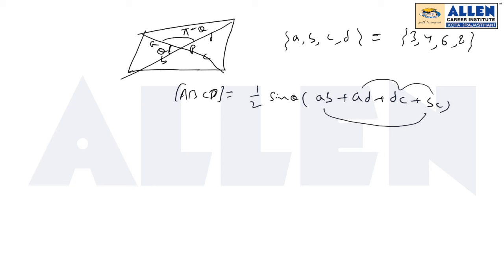So how will I assign A, B, C, D so that its product is maximum? Obviously sine theta must be equal to 1, so I'm taking theta as 90 degrees. I'm assuming the two diagonals intersect at 90 degrees. Now to maximize this value, I need to multiply the largest quantities.